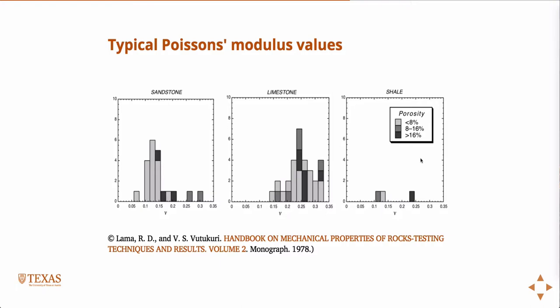Not as much variability, actually, in Poisson ratio. I usually think of a rock's Poisson ratio as somewhere around 0.2, at least there's a little variability in limestone, but 0.2 is a reasonable estimate.